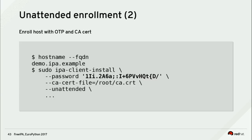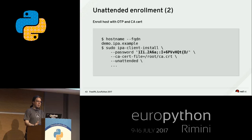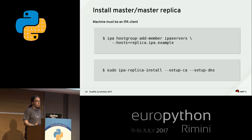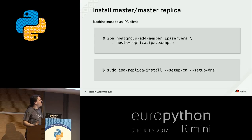To set up a replica, just add the machine to the IPA servers host group and run ipa-replica-install — no password needed. It sets up a failover DNS server, LDAP server, Kerberos server, and CA server automatically.